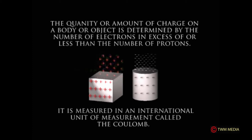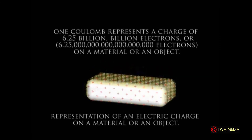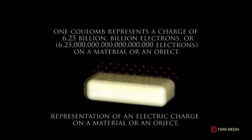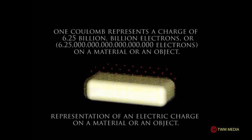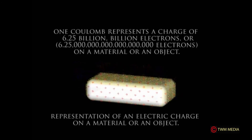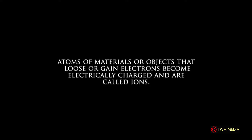The quantity or amount of charge on a body or object is determined by the number of electrons in excess or less than the number of protons. It is measured in an international unit of measurement called the coulomb. One coulomb represents the charge of 6.25 billion billion electrons on a material or object. Below is a representation of an electric charge on a material or object — atoms that lose or gain electrons become electrically charged.